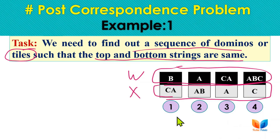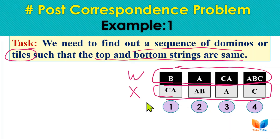Here the PCP problem has four dominoes: first, second, third, and fourth. The upper set is called W and the lower set is called X. W is having four substrings W1, W2, W3, W4 as B, A, CA, BC, and the X set has four substrings X1, X2, X3, X4 as C, AB, A, C. The same number of elements must be in set W and set X.